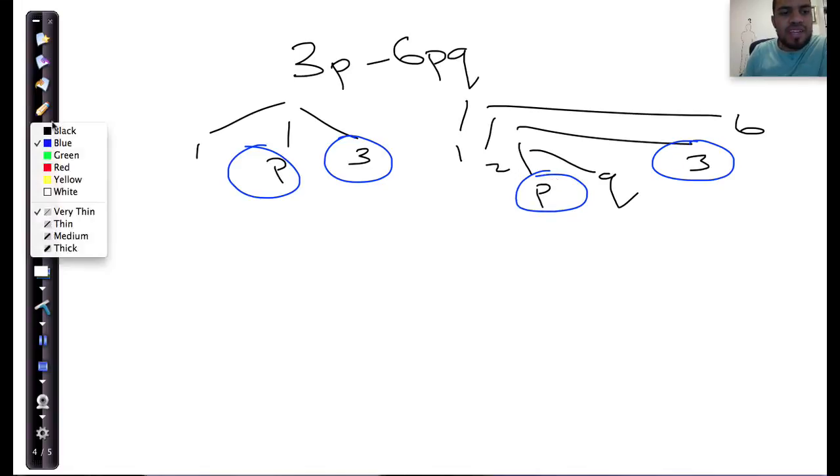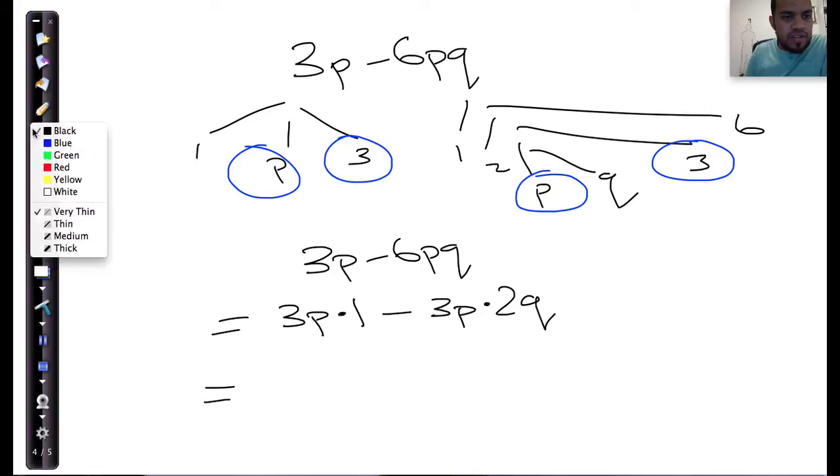So the entire 3p needs to come out. So let's look at that. 3p minus 6pq. And I'm going to take out what I see is common, and I'm going to say 3p multiplied by what will give me 3p. It's 3p times 1 minus 3p multiplied by what will give me 6. 3 times 2 will give me the 6. p is already there, and then I just need to put in q.